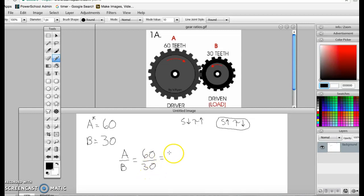How many times does 30 go into 60? That is two times. And 30 goes into itself one time. So the gear ratio is going to be 2 to 1.